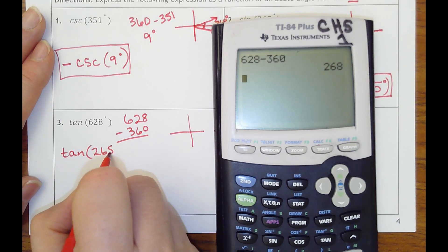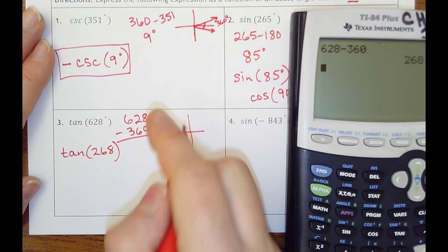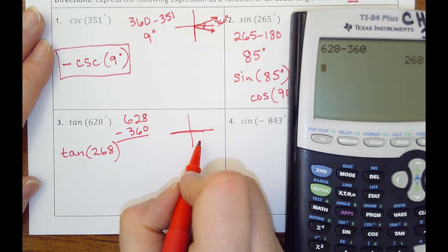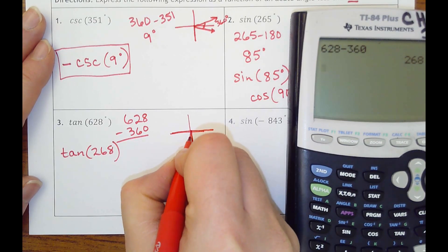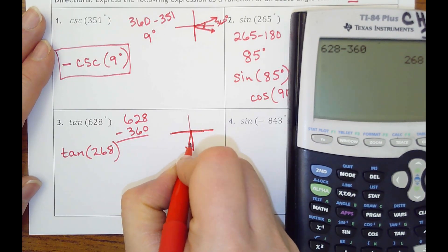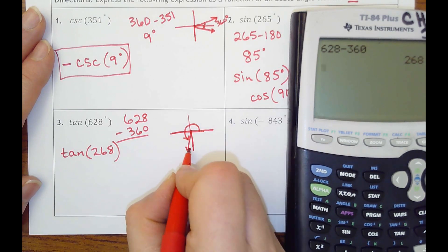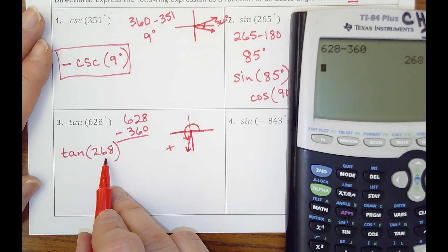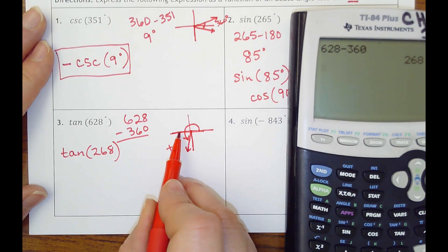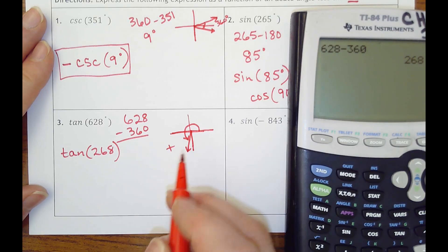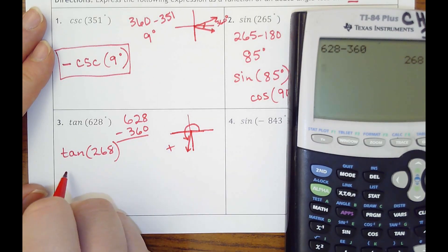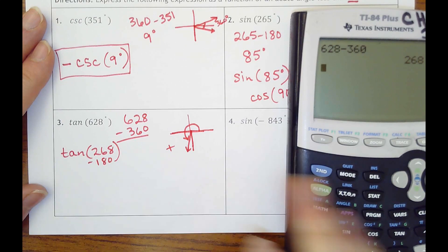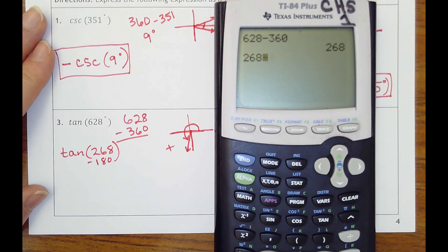268 would be again, almost 270. And tangent here in this quadrant, third quadrant is positive. Just so you know, that's going to get a positive number on my calculator. Then I would find the reference angle here. So we'd want to subtract that from 180 and that gets 88.